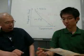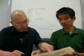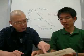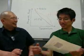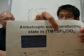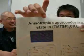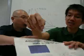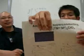What is exactly TMTSF2ClO4? TMTSF means Tetra-Methyl-Tetra-Selena-Fulvalene. So it's an organic material.